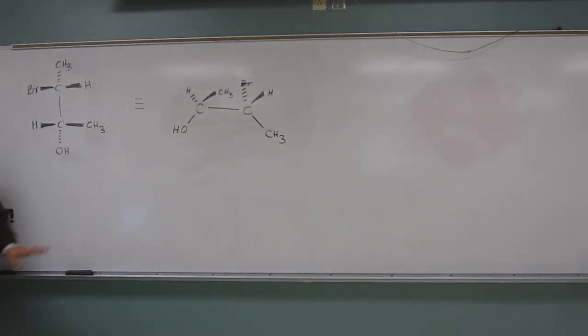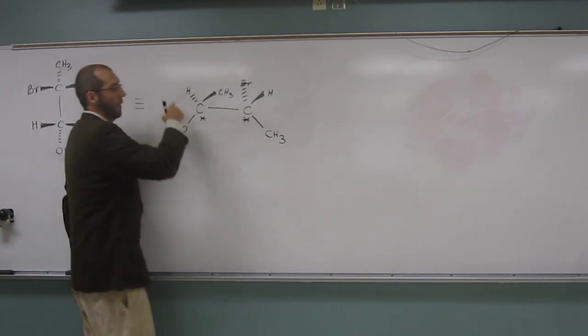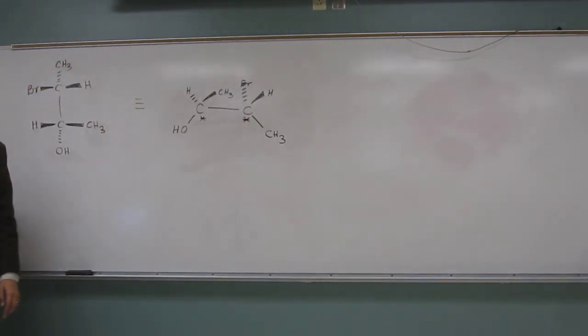Okay, we have the two stereocenters that we've already identified because they each have four different groups. Okay, so one of the two stereocenters we can identify whether it's R or S already, right? Which one is it, the left or the right?